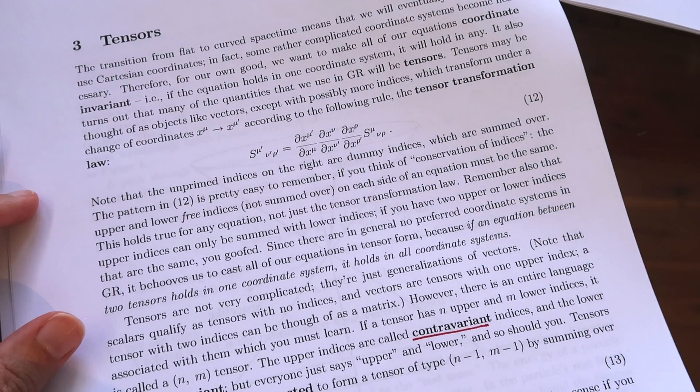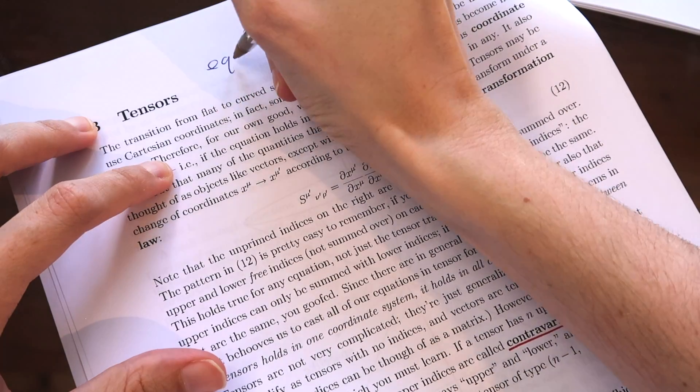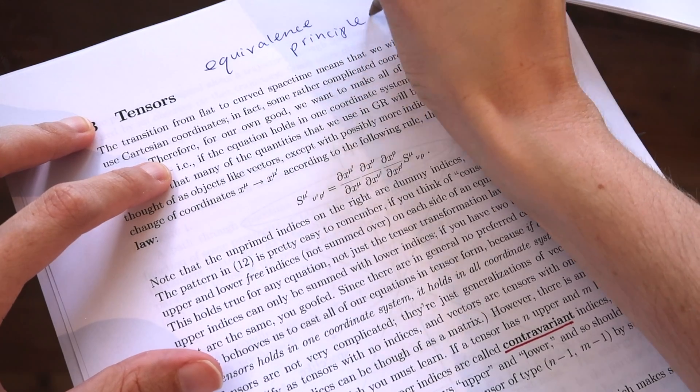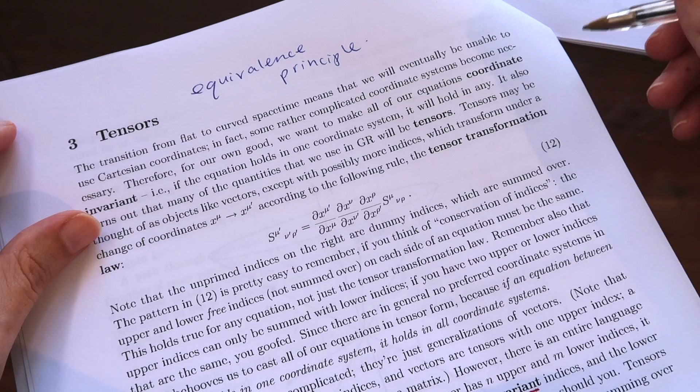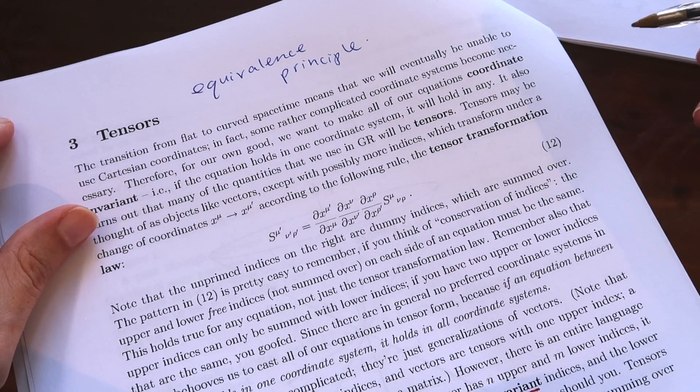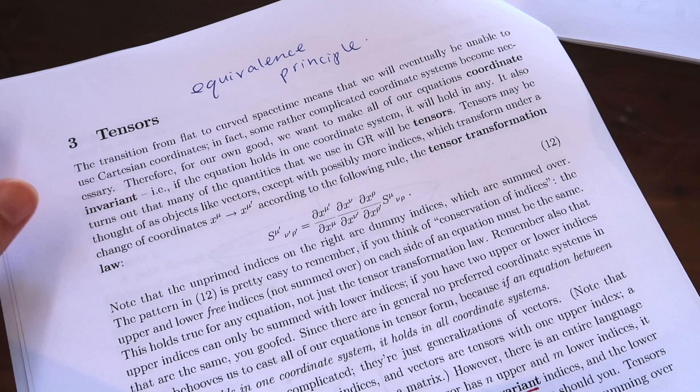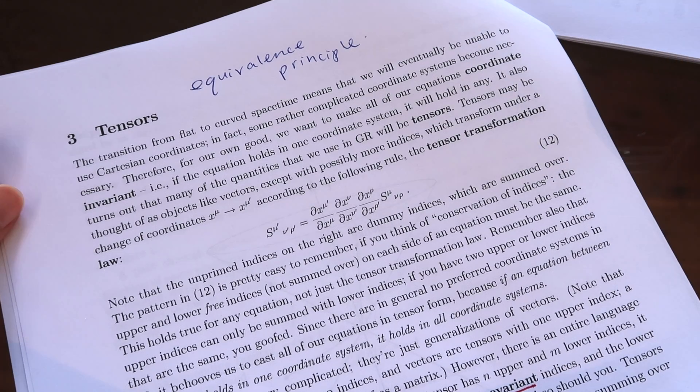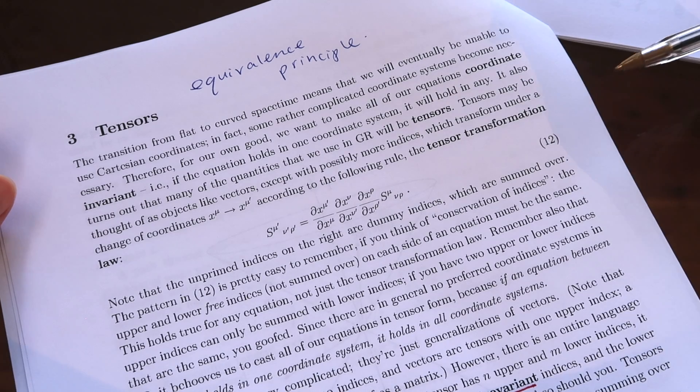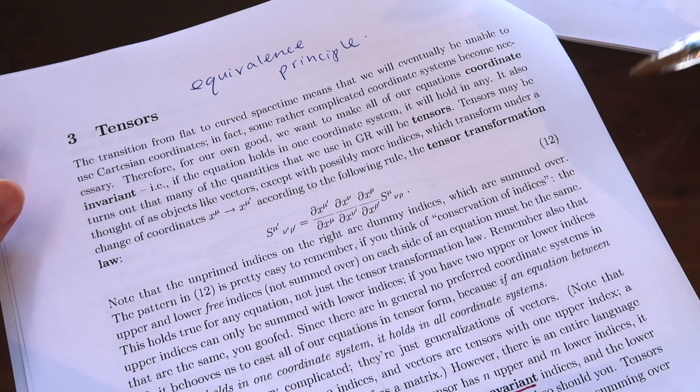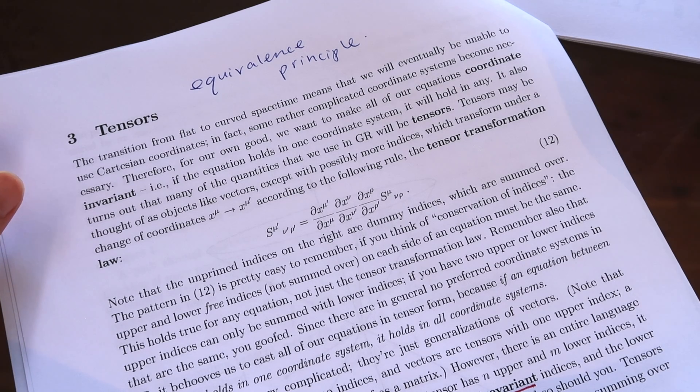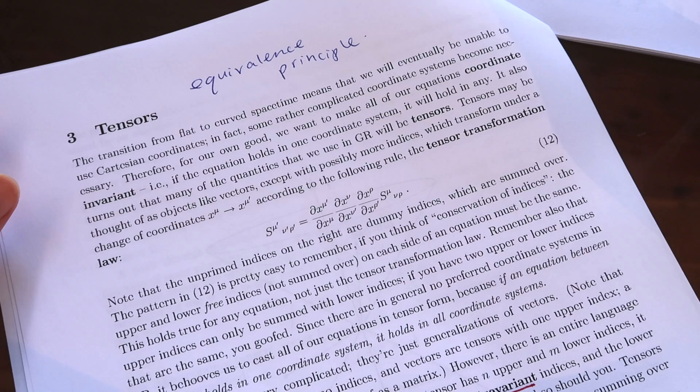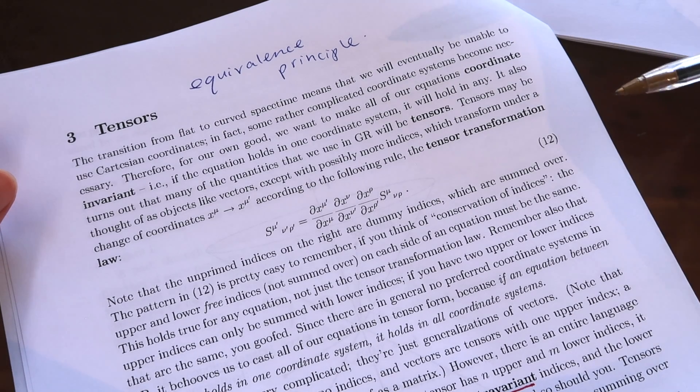Well one of the big ideas in general relativity is the equivalence principle and I guess it says that in some situations you won't be able to tell the difference between gravity and acceleration. For example if you're in an elevator both the effects of gravity and the effects of acceleration would feel the same to you. So sometimes we have to wonder if space-time has a real gravitational field or if we're just experiencing the effects of acceleration and the question of whether space-time has a real gravitational field is similar to asking whether a geometry is flat.